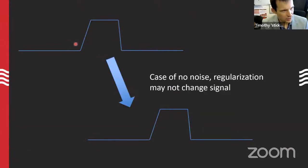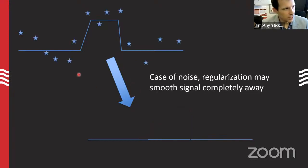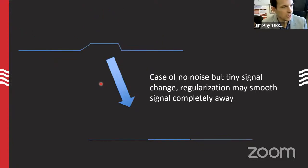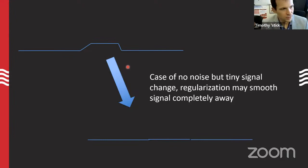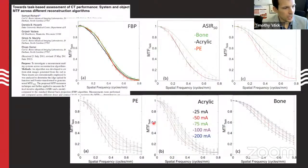When a signal is present without noise, regularization may preserve it perfectly. But once noise is added, the algorithm may not detect the edge and could wash the signal out entirely. This introduces a non-linearity: performance now depends on noise level, making it a dose-dependent algorithm — not good in the clinic. Similarly, if the signal level is too small, the algorithm might wipe it out, while a slightly more intense lesion of the same size would be retained.